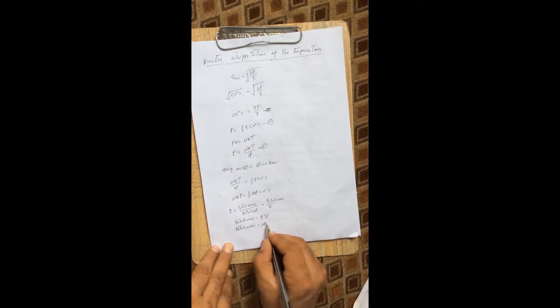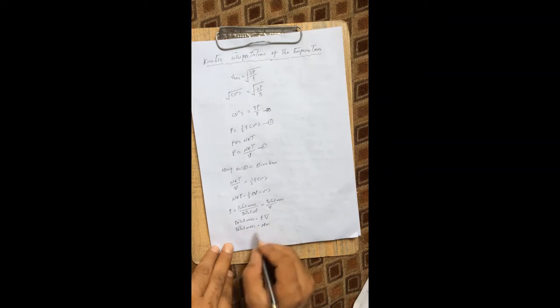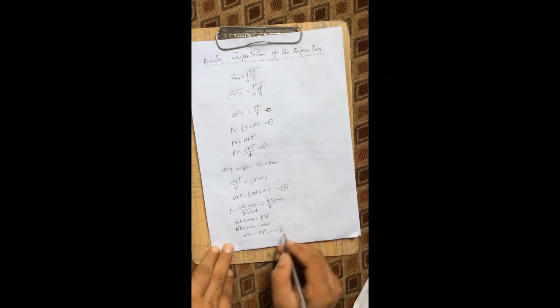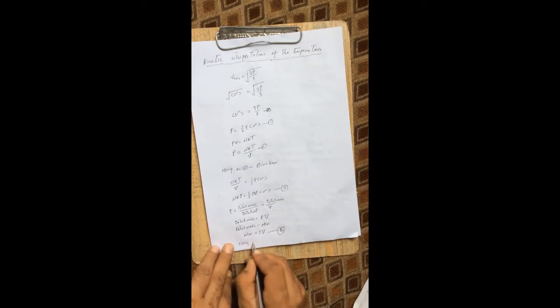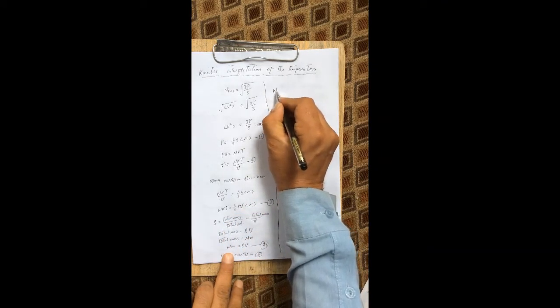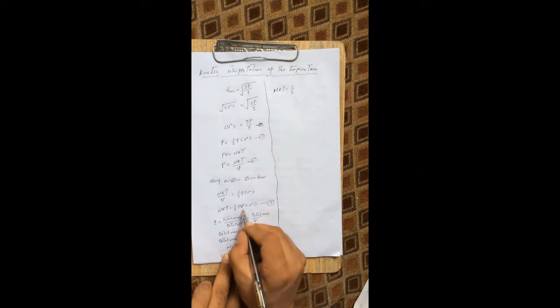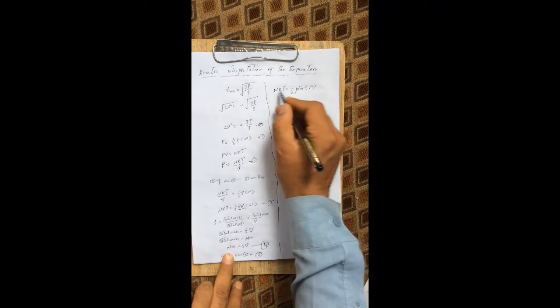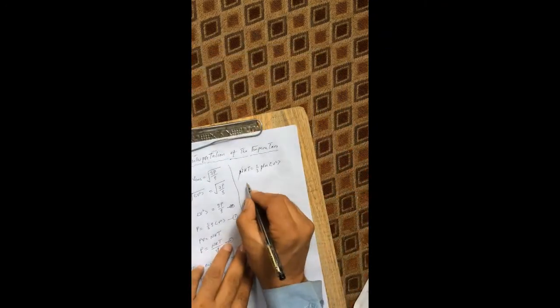We also know that total mass equals the total number of molecules N times the mass of each molecule m. Comparing these two expressions, we get Nm equal to rho times V — this is equation four. Using equations three and four, substituting rho V with Nm, we get nkT equal to one-third Nm times v²; cancelling N we get kT equal to one-third m times v².